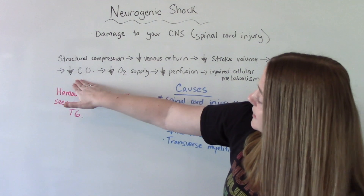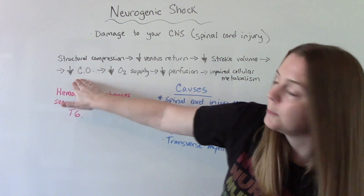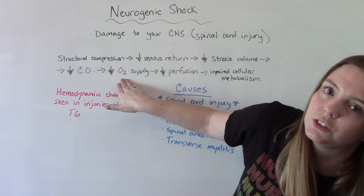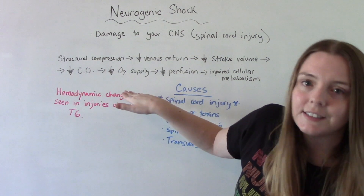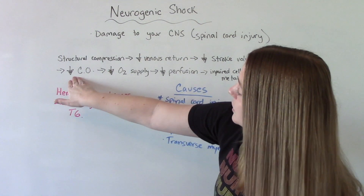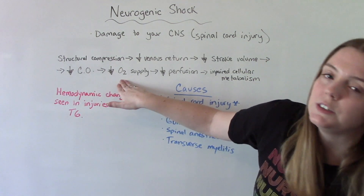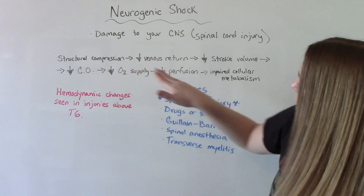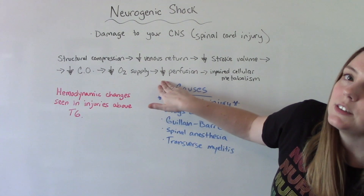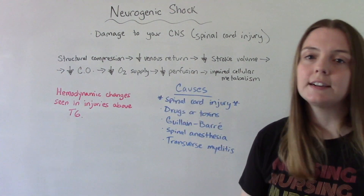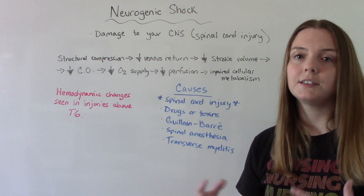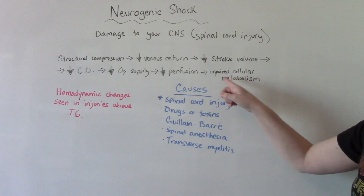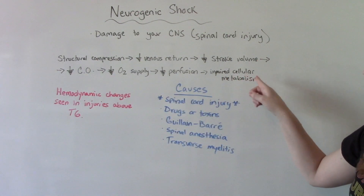When cardiac output is decreased, there's less blood being pumped, which means there's also less oxygen getting to the body — because the blood carries the oxygen. Decreased cardiac output leads to a decrease in overall systemic oxygen, which leads to a decrease in tissue perfusion — less oxygen going to our tissues — and eventually this will lead to impaired cellular metabolism.